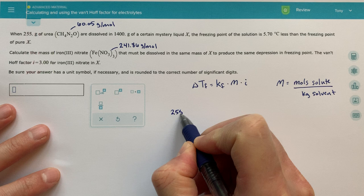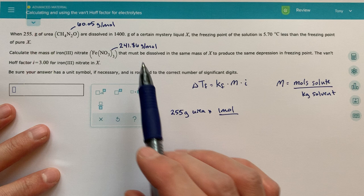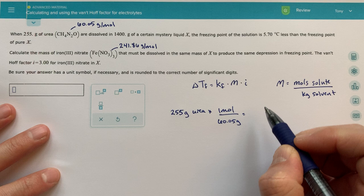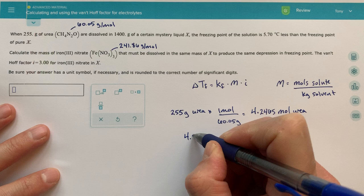The first step of this is going to be to convert this 255 grams of urea. I'm just going to write urea into moles. I know that we need to do this because basically we need to figure out what the molality is of our solution. So one mole is 60.05 grams, and then that's going to tell us that we have 4.2465 moles of urea.